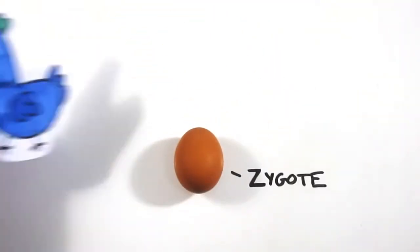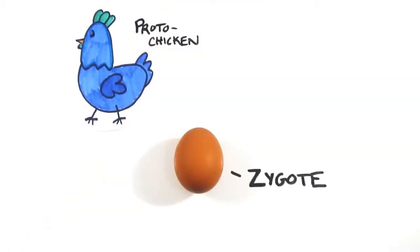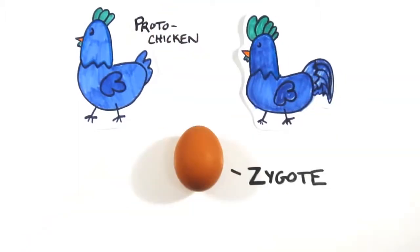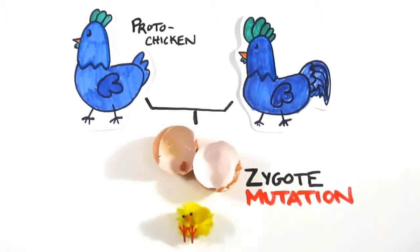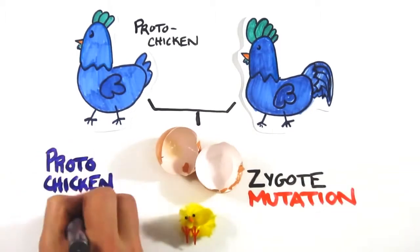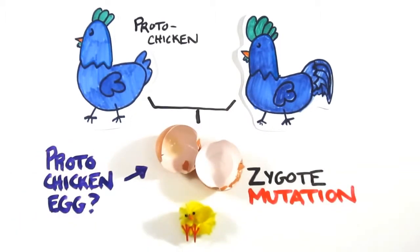So a creature very similar to a chicken, which we could call a proto-chicken, would have mated with another proto-chicken, and because of a small genetic mutation created the first chicken, which grew in an egg. So, the egg came first? Well, team chicken might argue that this was simply a chicken growing inside of a proto-chicken egg.